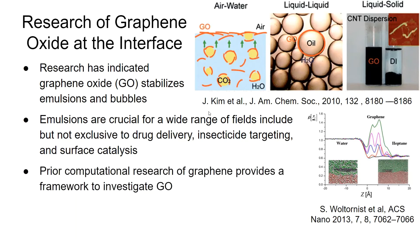Prior computational research of graphene provides a framework to investigate graphene oxide. On the figure to the right, you can see a density plot taken of water, graphene, and heptane. As expected, water has approximately a density of around 1, and heptane has approximately a density of around 0.7. Interestingly, near the interface, you can see that there is a spike of density which represents the graphene, where green is 4 sheets, purple is 3 sheets, blue is 2 sheets, and red is 1 sheet. As you can see, as the number of sheets increases, the density increases, which is what you would expect because there's more graphene at the interface.